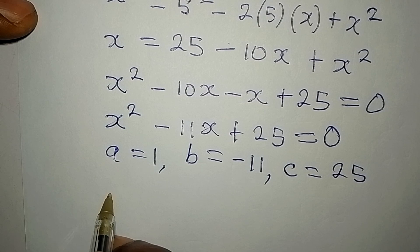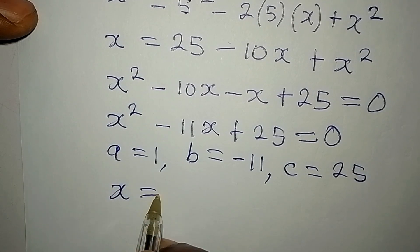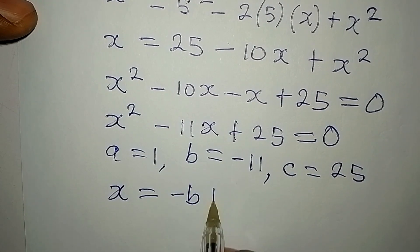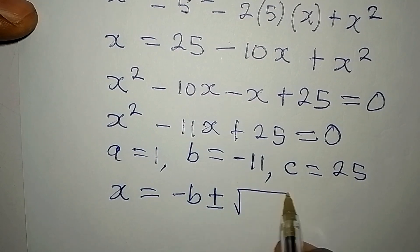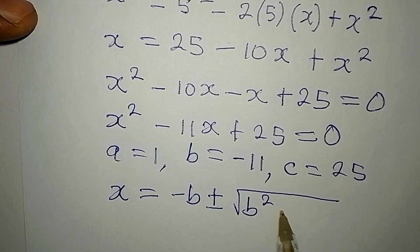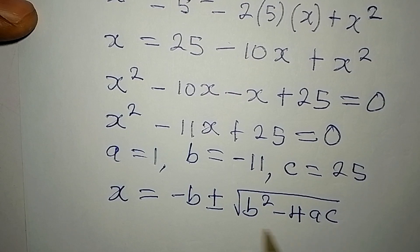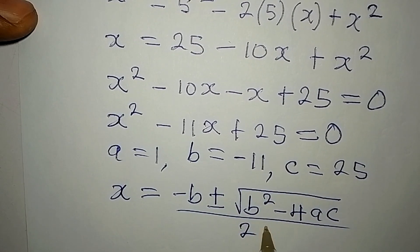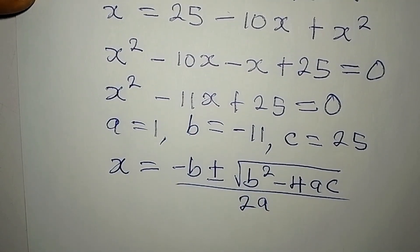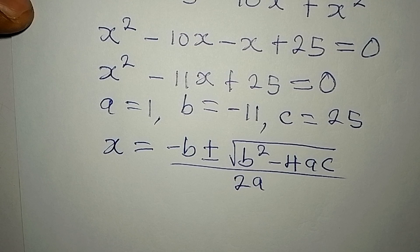The formula is x equal to negative b plus or minus square root of b squared minus 4ac over 2a. So what we'll do now is to substitute into this formula.